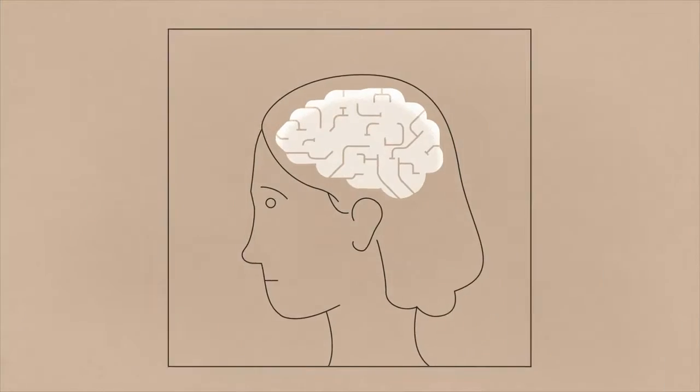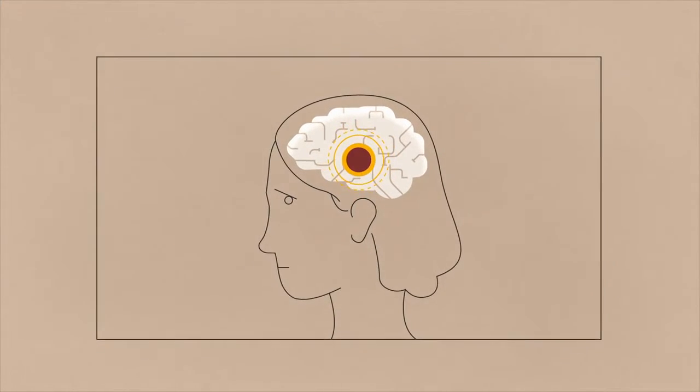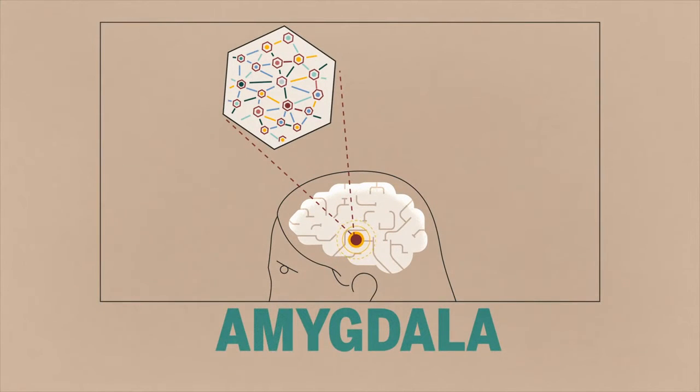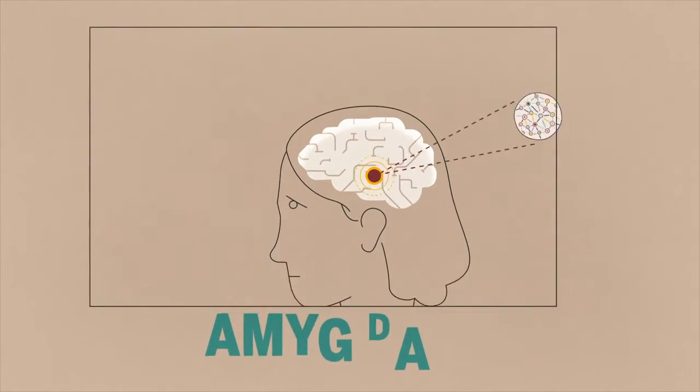For example, chronic stress increases the activity level and number of neural connections in the amygdala, your brain's fear center. And as levels of cortisol rise,